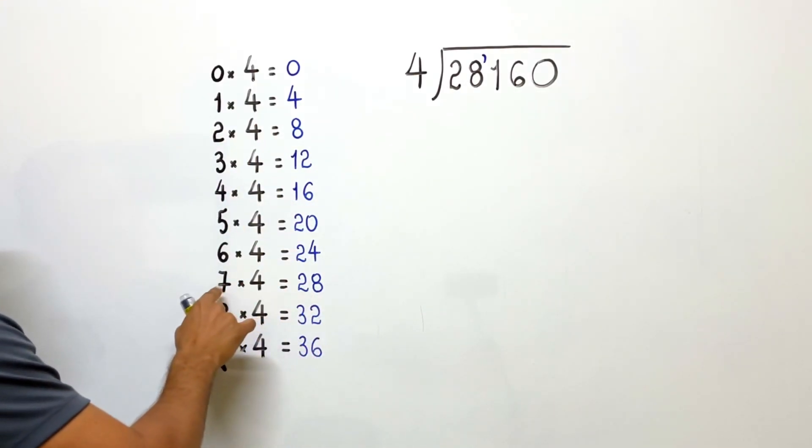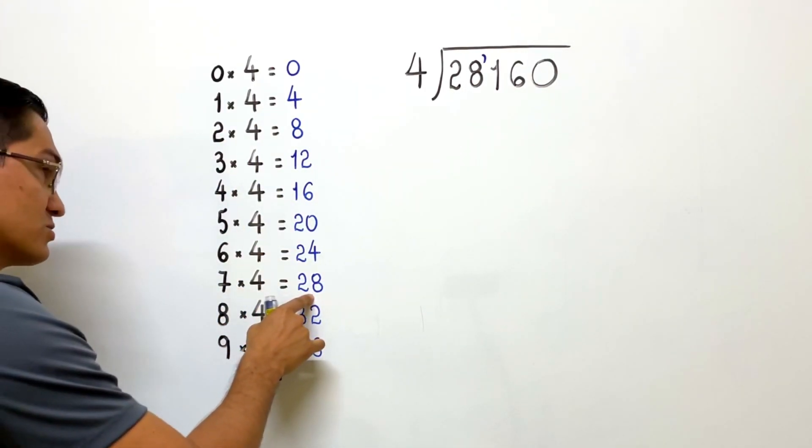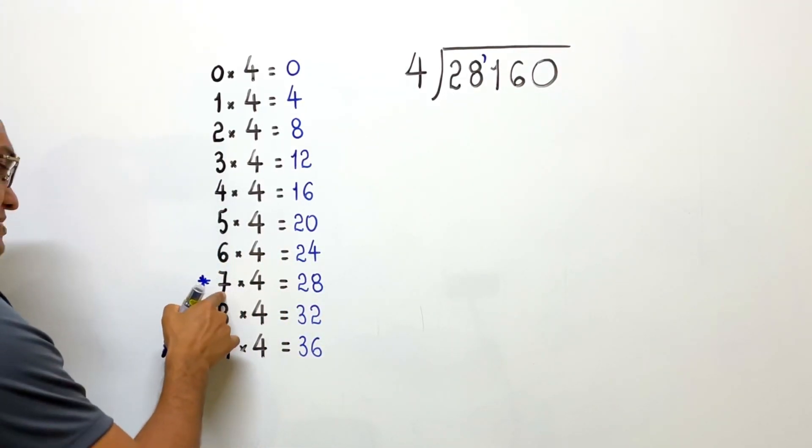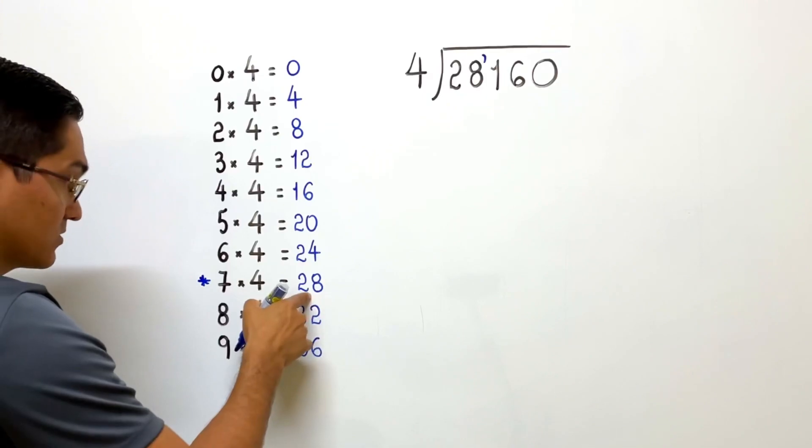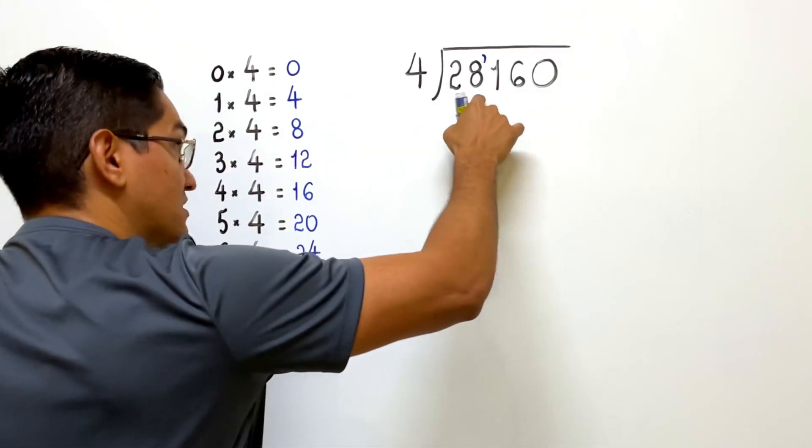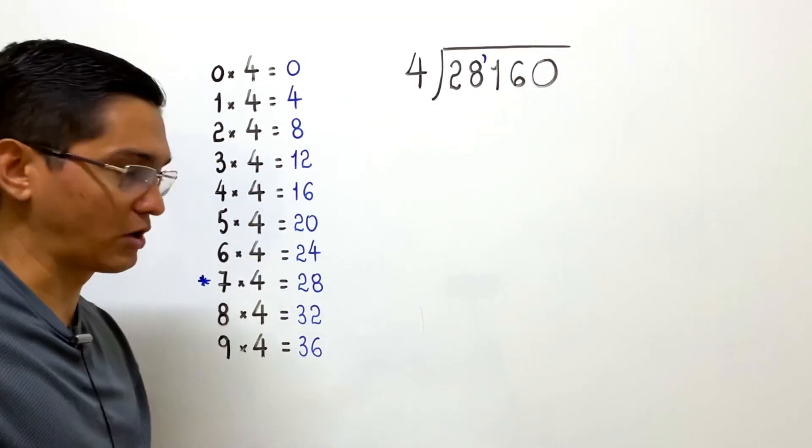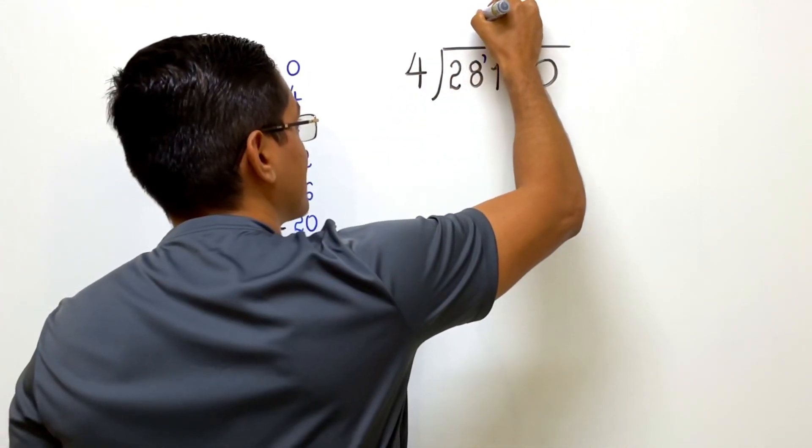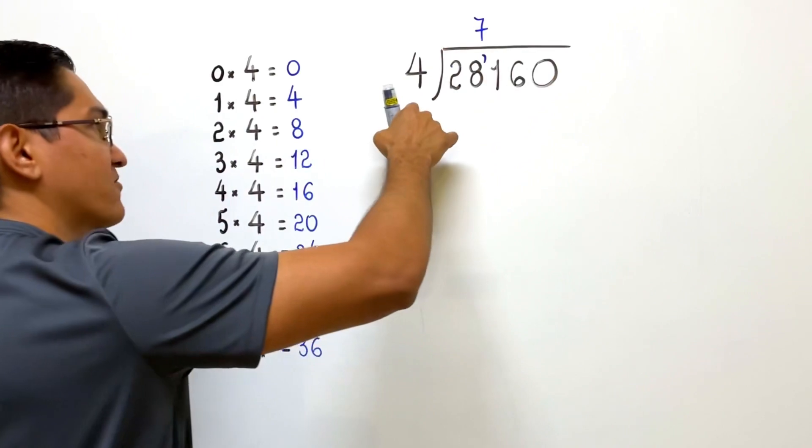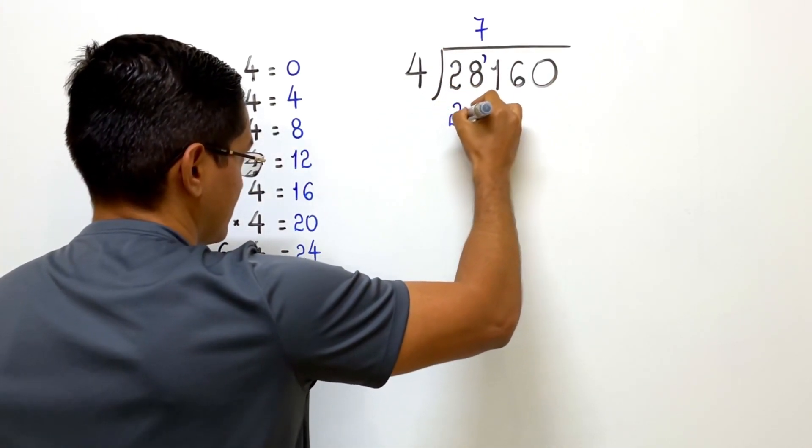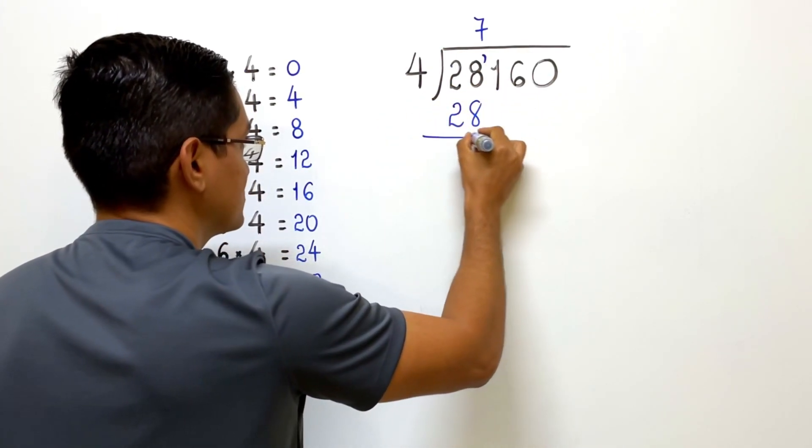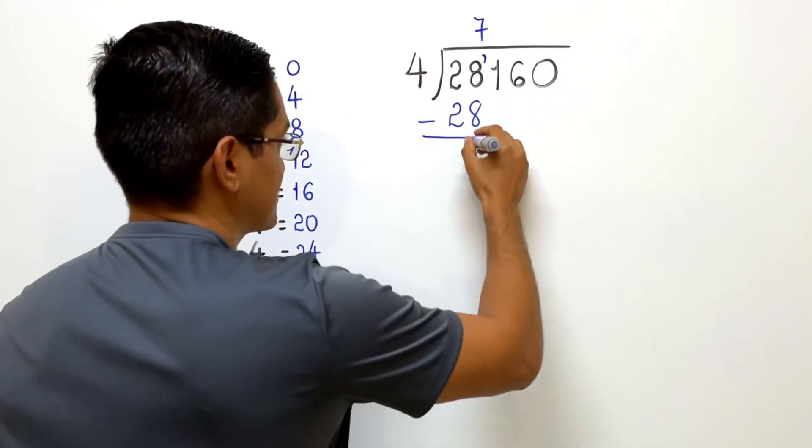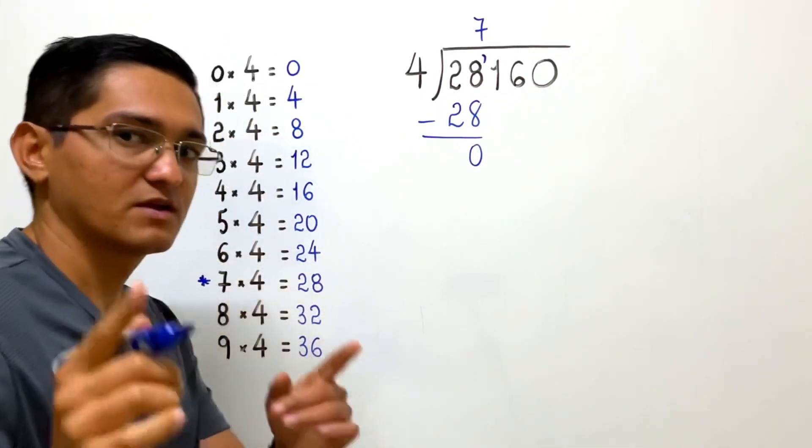I see that 7 times 4 is 28. Great. So the number we were looking for is 7. We can get a result that is equal to the number that we have here, but not more. I write 7 here. What is 7 times 4? It's 28. And then we subtract. What is 28 minus 28? It's 0. That's pretty easy. I agree with you.